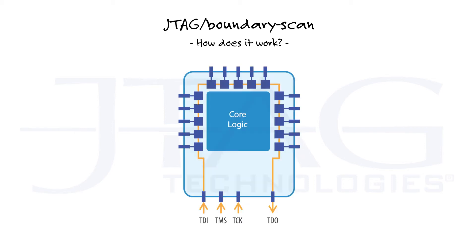The signals TCK, TMS, TDI, and TDO together form the test interface of the chip, which is referred to as the JTAG interface or test access port (TAP).